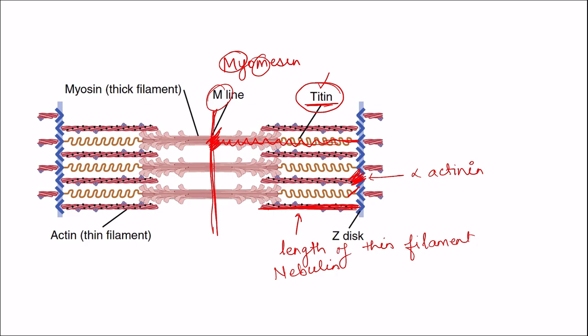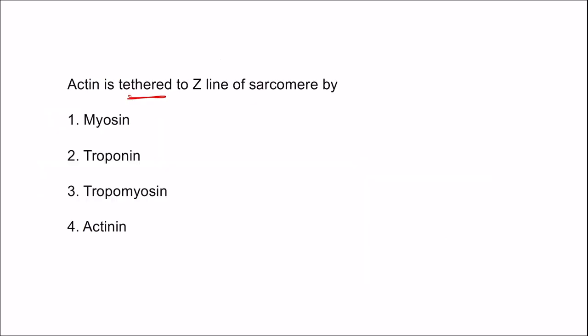The answer is simple: actin is tethered to the Z line by actinin. Myosin is the contractile protein that pulls actin toward the center, while troponin and tropomyosin are regulatory proteins. That covers the structure of the sarcomere and the details of the proteins present in it. Thanks for watching — if you liked the video, press the like button, share it, and subscribe to the channel Physiology Open.